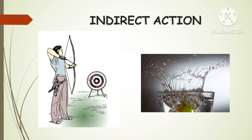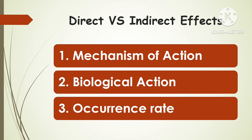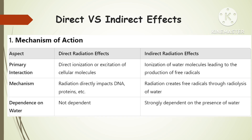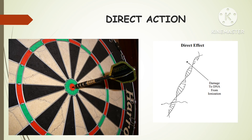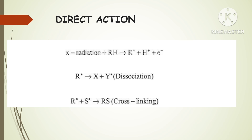The target getting wet and damaged by water represents the DNA being damaged by the free radicals. Comparing direct and indirect radiation effects: direct ionization or excitation of cellular molecules is the main mechanism behind direct effects. In indirect radiation effects, it causes ionization of water molecules which leads to the production of free radicals, which may bring further damage to the tissues. In direct radiation effects, radiation directly impacts DNA and proteins, whereas in indirect radiation, radiation creates free radicals through radiolysis of water, which then induce the damage.